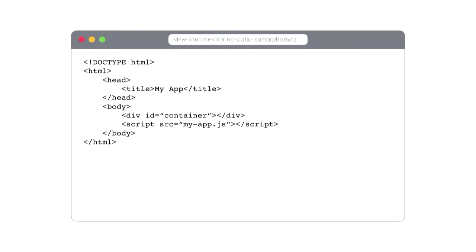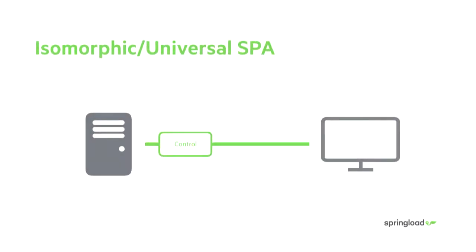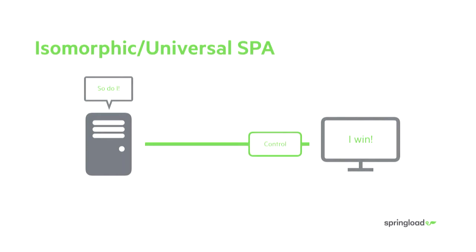Because of this, there have been solutions where we start talking about isomorphic or universal JavaScript. In this scenario, not only does the client win, but the server kind of wins as well — they're sharing control together. First, the code is executed on the server, it renders your website, and sends a response to the client with all the content inside it. Then the exact same code is bootstrapped and executed on the client, loading an initial data dump that you might embed into a global variable. The smart algorithms that come with React or Vue can bootstrap this so it reuses the markup on the page. It's efficient.